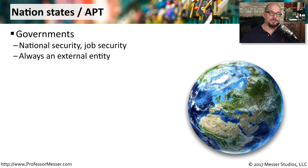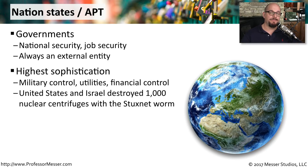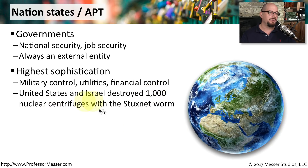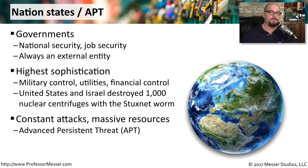Some of the most disruptive threat actors are governments, where you have experts in hacking working for a governmental agency. They're usually focusing on national security, and the hack is usually performed against an external organization or government. Nation states perform very sophisticated hacking, usually attacking military organizations or very large security sites. For example, the United States and Israel got together and destroyed 1,000 nuclear centrifuges with a single worm — a good example of what's called an advanced persistent threat, or APT.